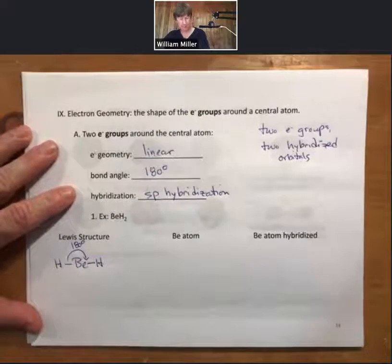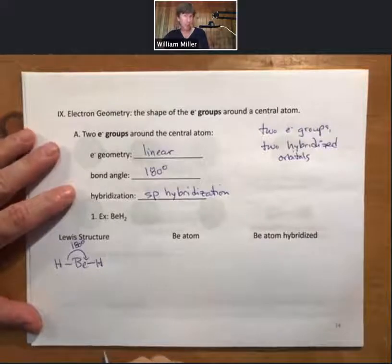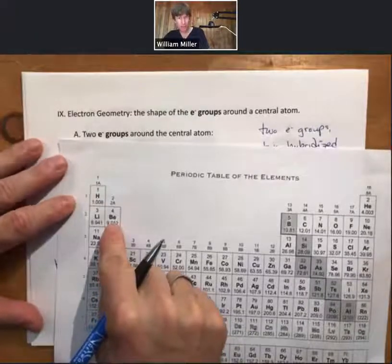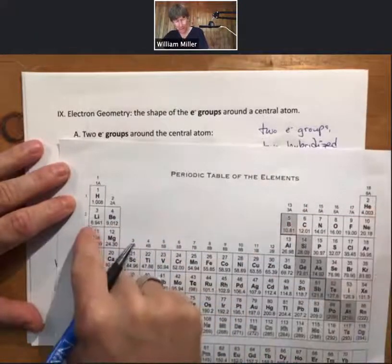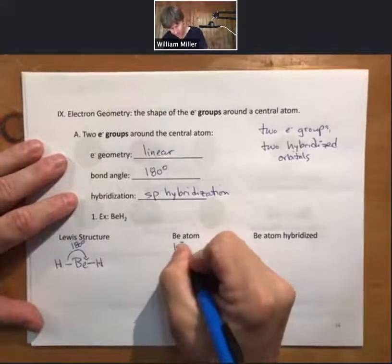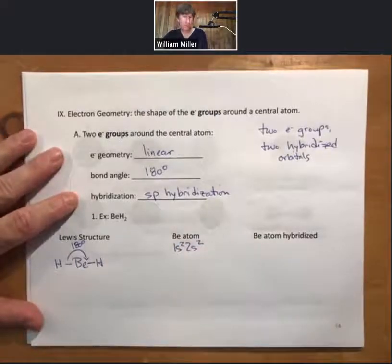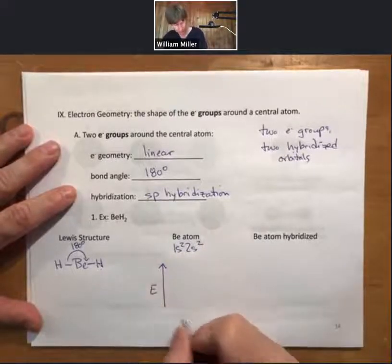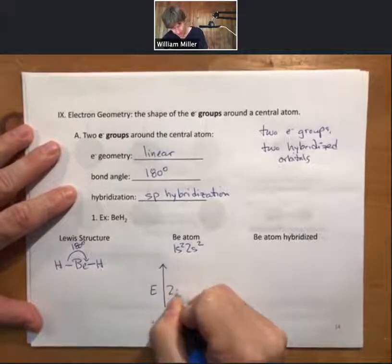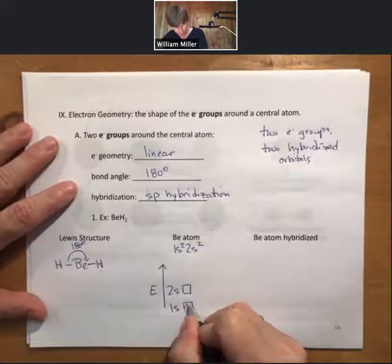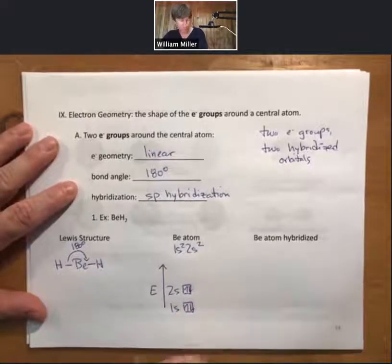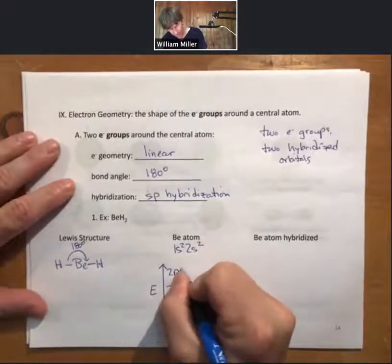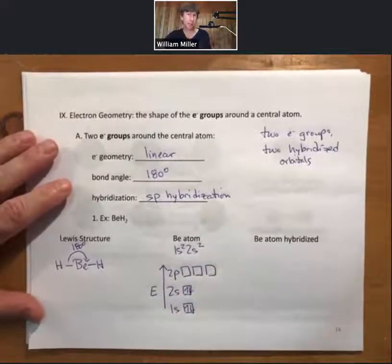Let's do the electron configuration for the beryllium atom. Beryllium has four electrons: 1s2, 2s2. If we draw the orbital energy diagram, we have 1s and 2s filled with those four electrons, and the 2p exists but doesn't have any electrons in it. We're going to draw the 2p and all three of the 2p orbitals.